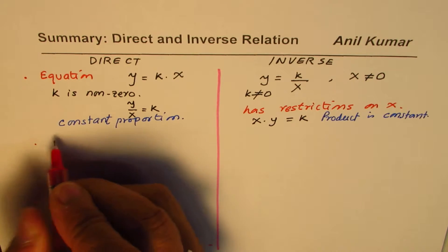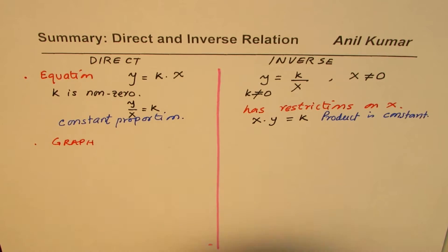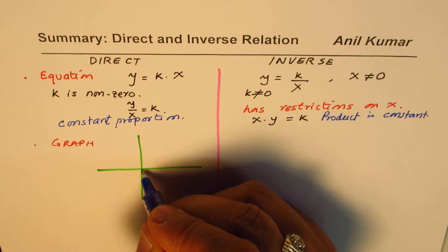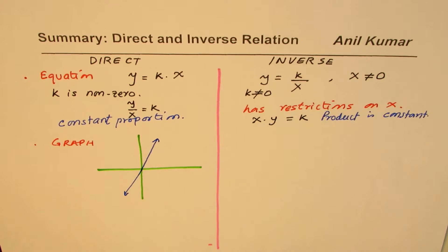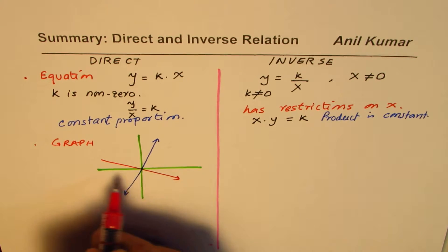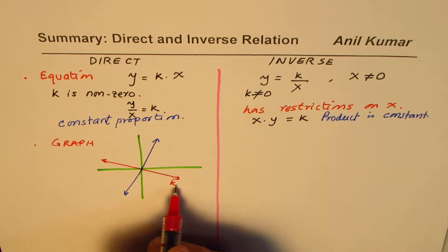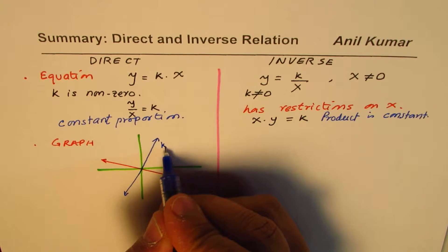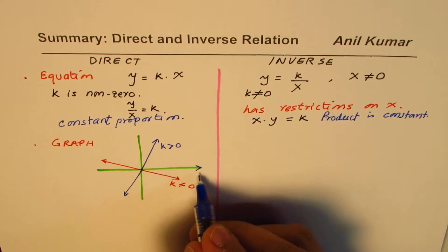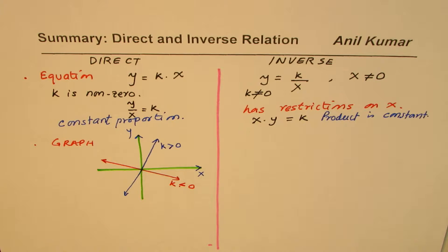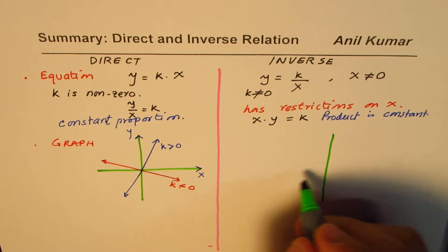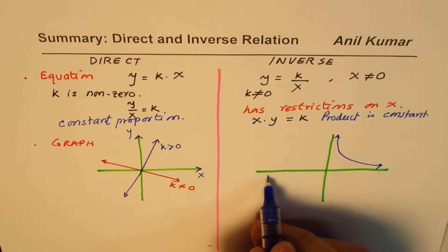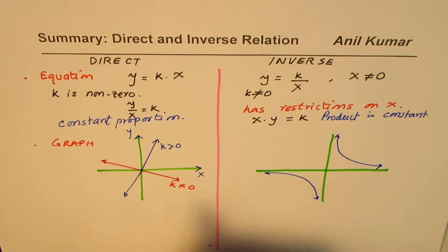From the graph, for a direct relation we'll always have a straight line going through zero. If k is greater than zero, it's an increasing line; if k is less than zero, the line has a negative slope. For inverse relation, the graph looks like a reciprocal function — a curve with two branches.